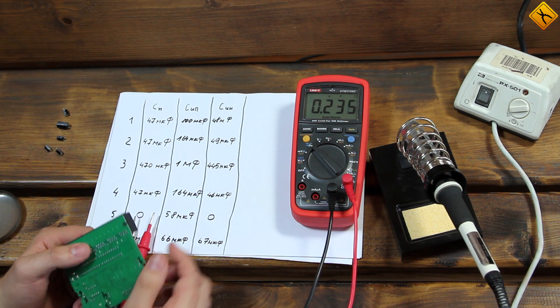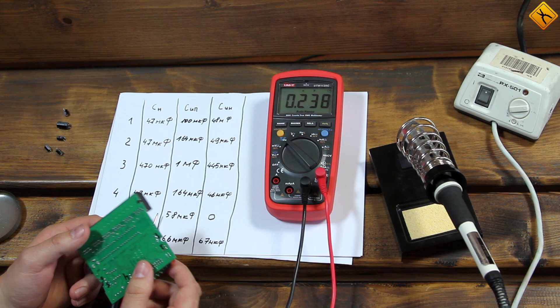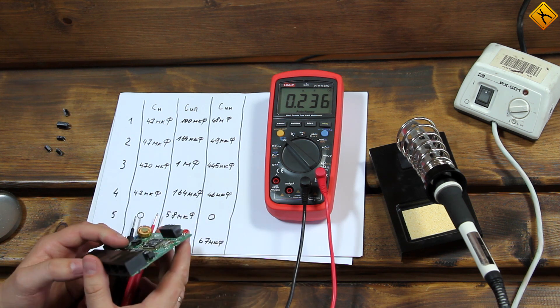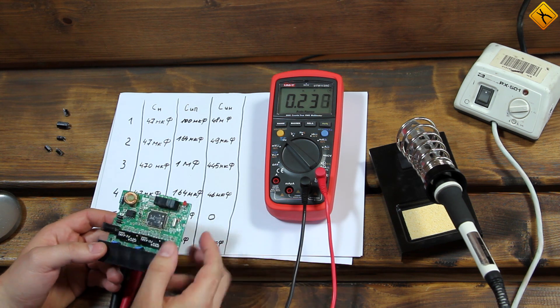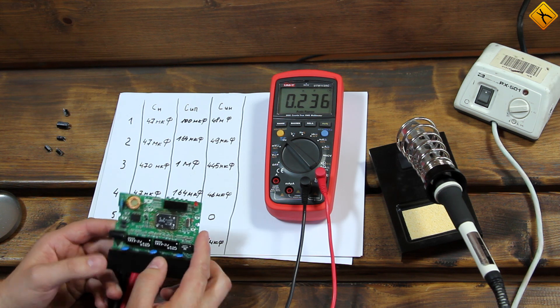Some may say that I wasn't using a special RLC meter that measures ESR, but a regular multimeter instead. First of all, this multimeter measures capacitance very accurately, as we have previously shown.